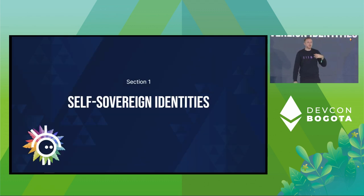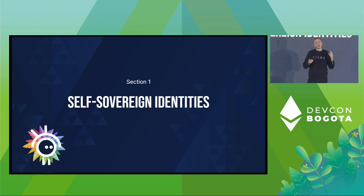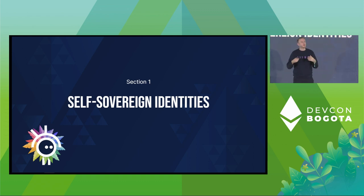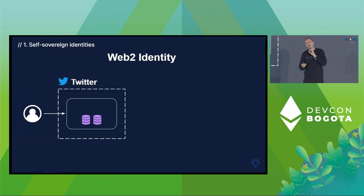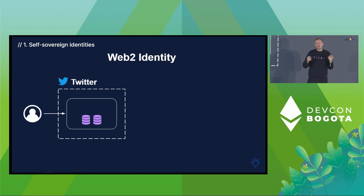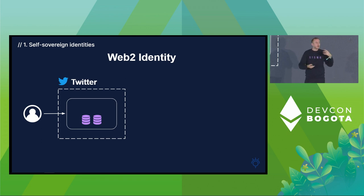Before getting into the technical part of ZKBadges, I'd like to spend some time on self-sovereign identities — that's what ZKBadges are built for. Our goal with ZKBadges and Sysmo is to make sovereign identities more powerful than Web2 identities — better than your Google account. In Web2, your identity is stored in an account like Twitter. You choose your username and password, and they give you an account — but they don't really give you the account. It's still theirs, and you can only access it if they are willing.